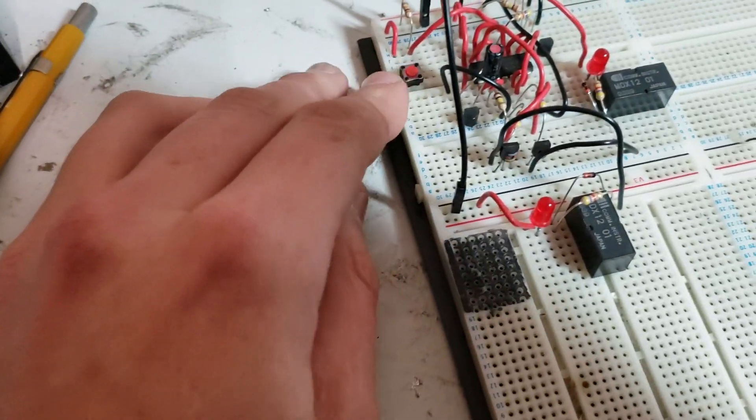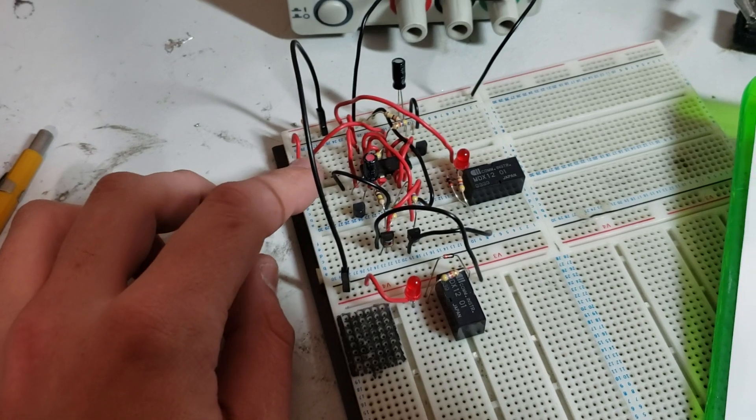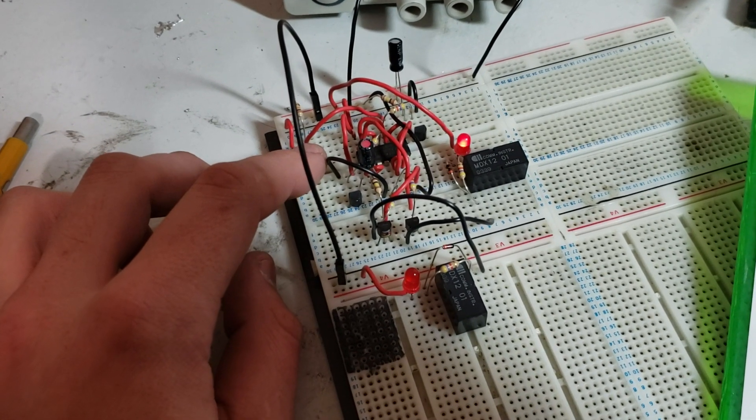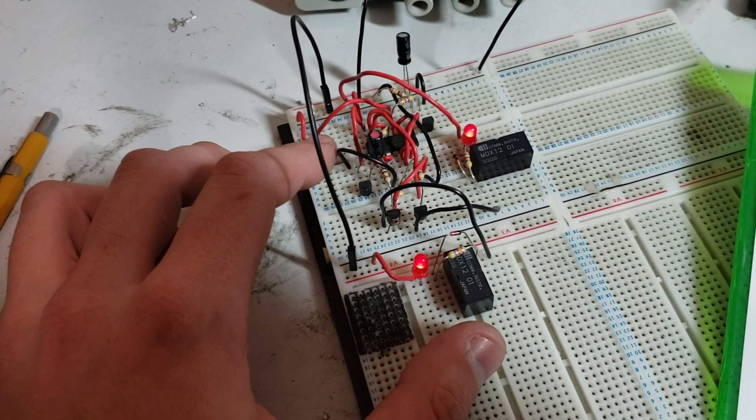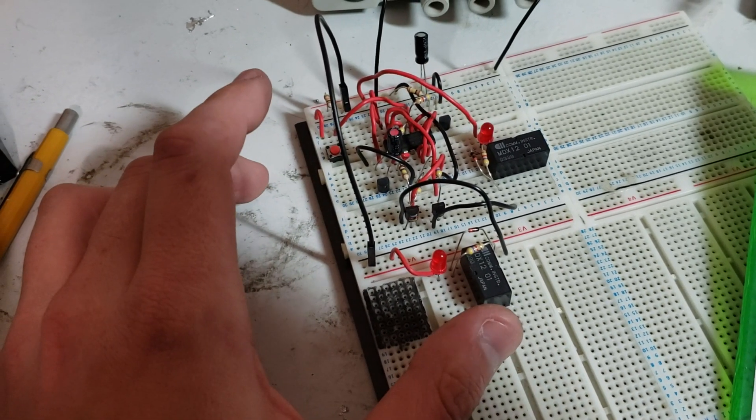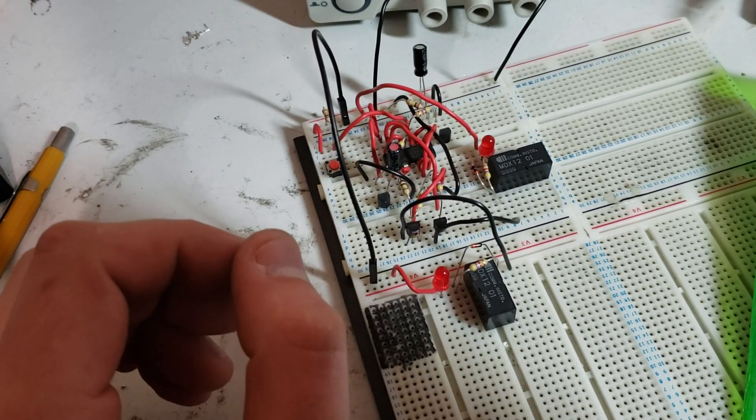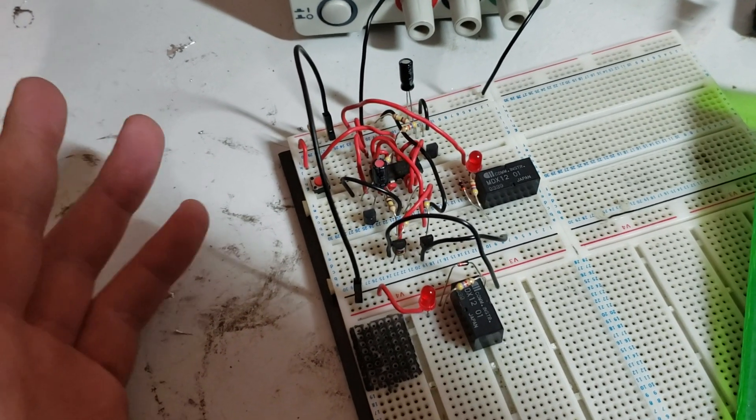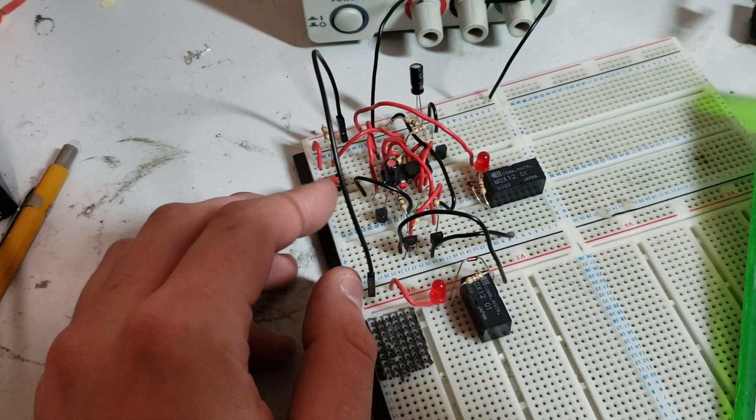So this little button over here, this is going to be our microphone switch or foot pedal or however you like to key your mic. So when we push this, you notice there's a delay in turning on the radio. So right now the time frame, the delay time is completely exaggerated. When this is in use, the delay time is only going to be about 50 milliseconds. But I've got some bigger capacitors in there just for demonstration.